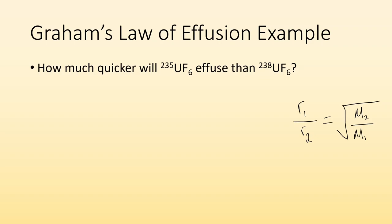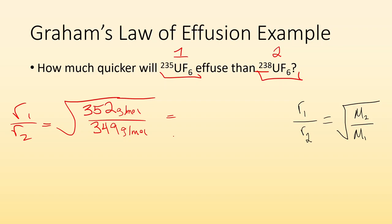Another example. How much quicker will uranium UF6, uranium-235, effuse than the same molecule but with uranium-238 instead? So it's the same kind of process. I'm going to make this one number 1 and this one number 2. And then I go, all right, rate 1 divided by rate 2 has to equal the square root of M2. So the molar mass of all this is 352 grams per mole divided by the molar mass of all that which is 349 grams per mole. When I do that math I end up with almost 1. Those numbers aren't significantly different but we get 1.008596 and I could keep going but I'm going to stop there. So I know that the lighter molecule will effuse 1.008596 times quicker.